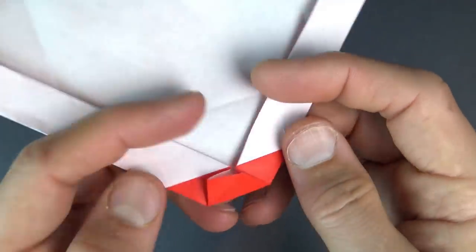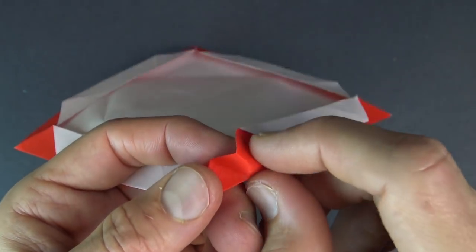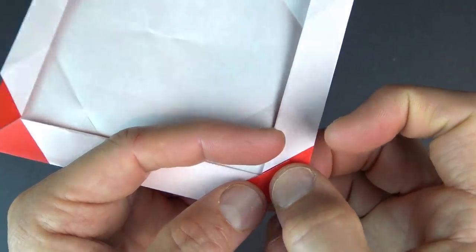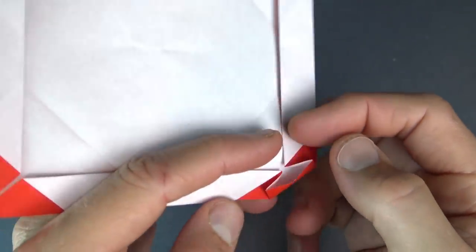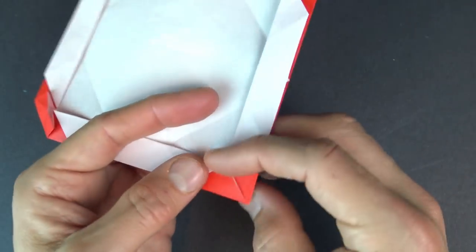And now we're going to repeat on this side. So, pull it out, and there's the crease. Pinch on it. And flatten. So, it's like that. And do that on the other three corners.